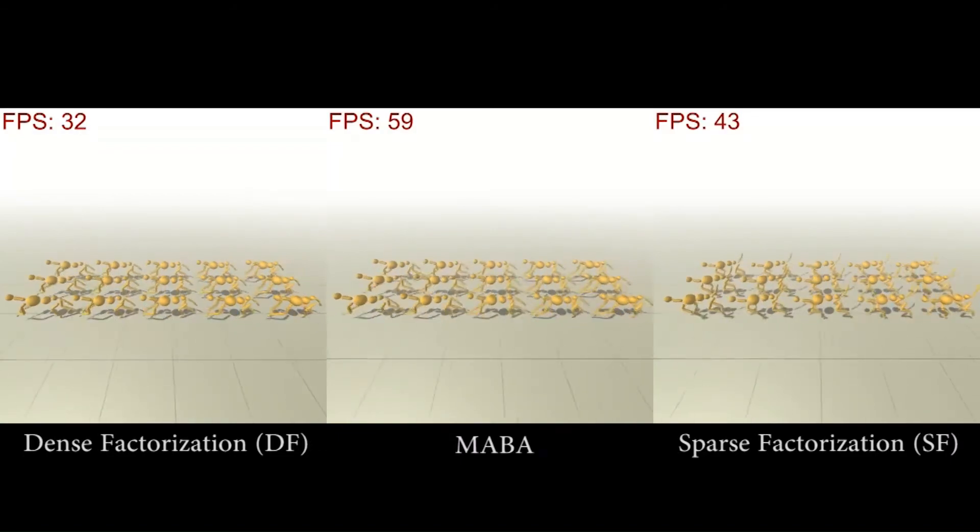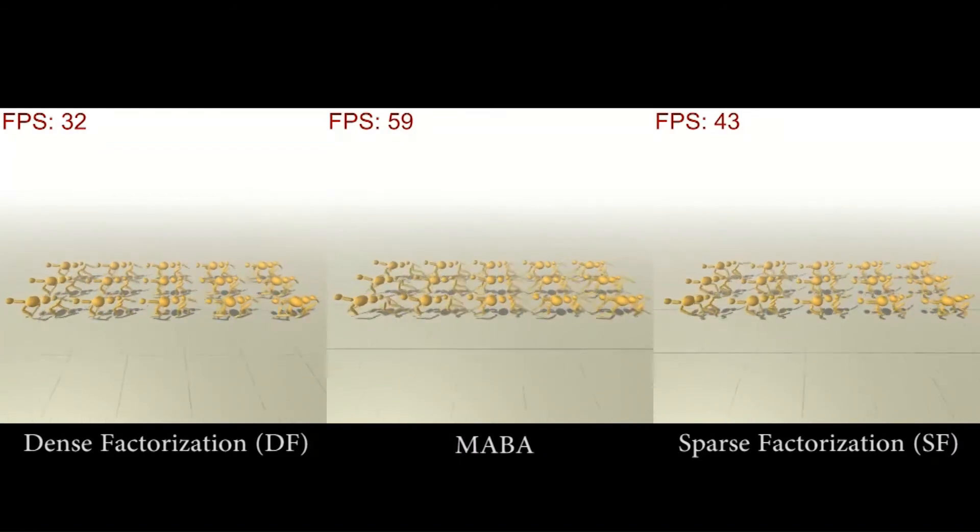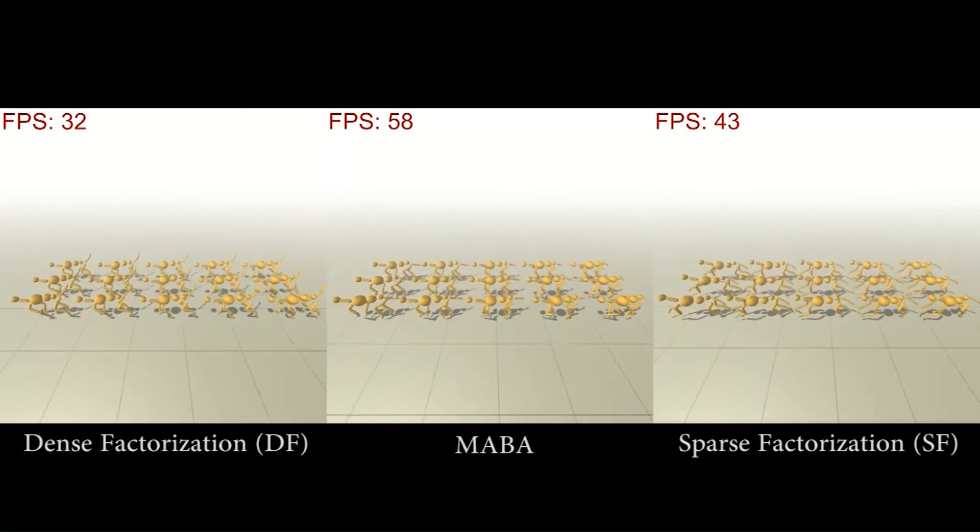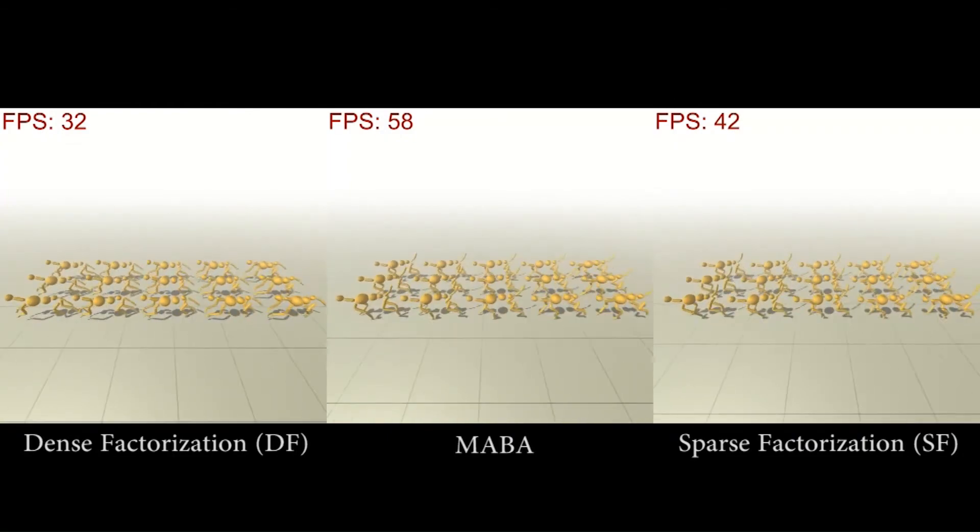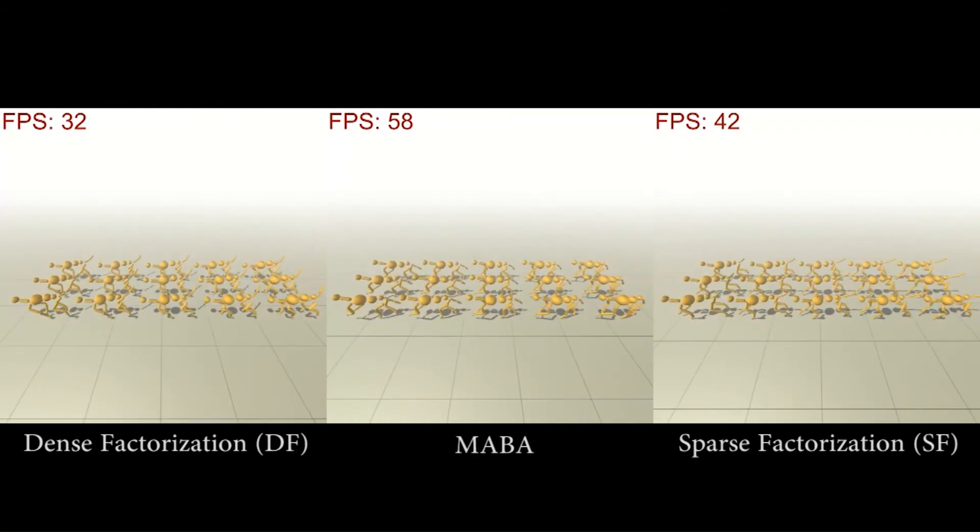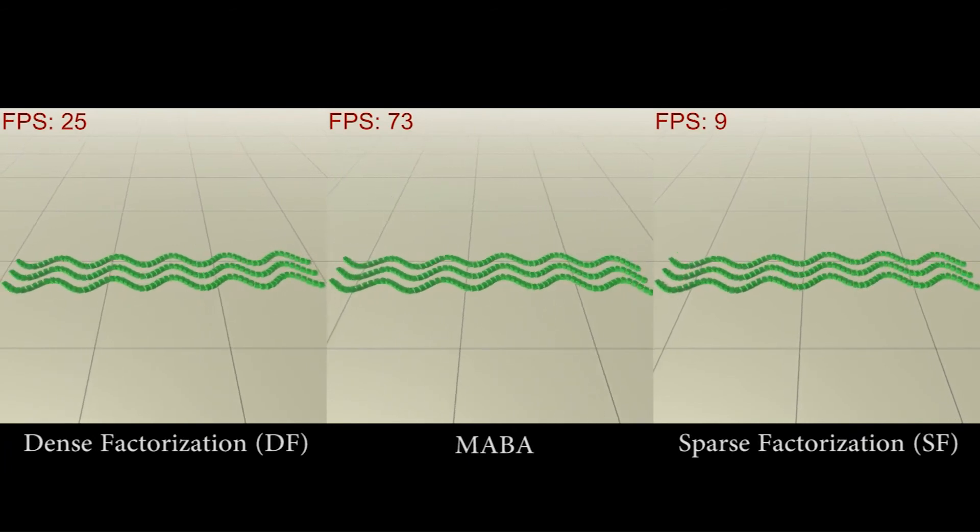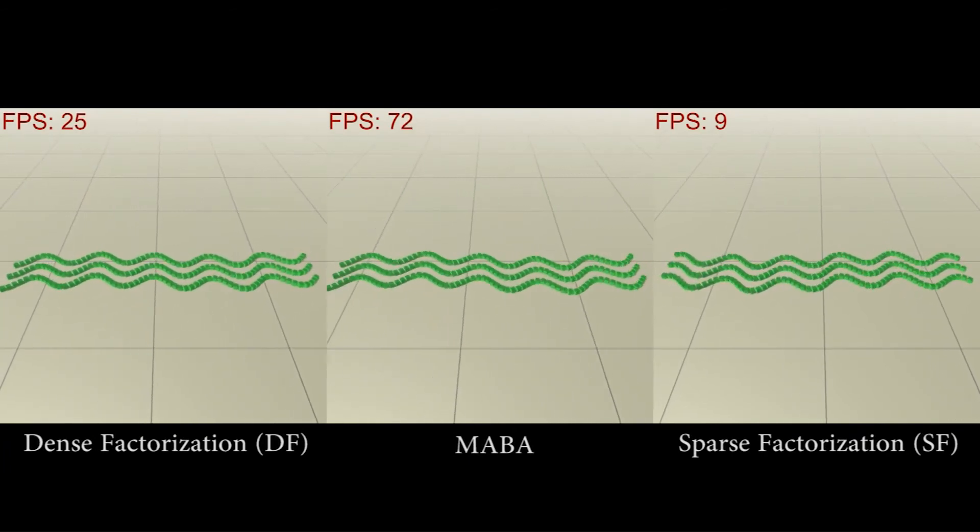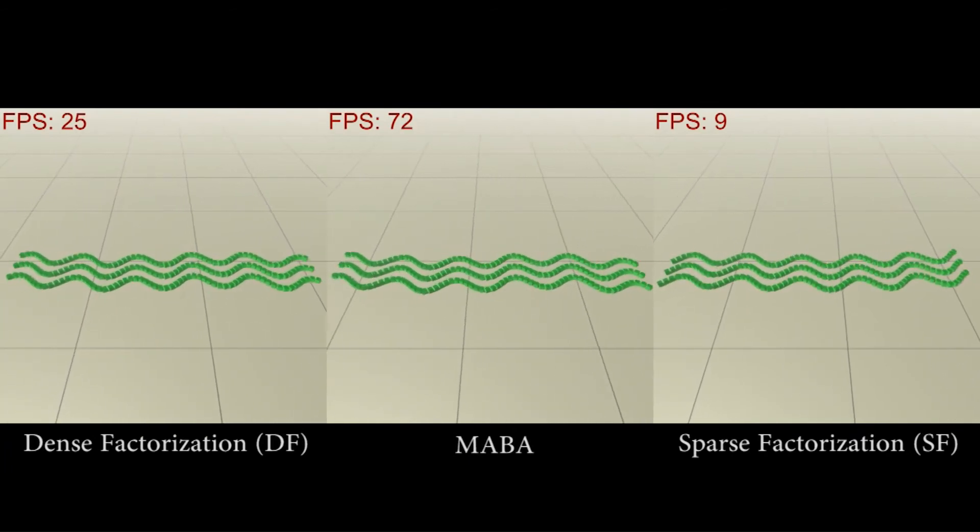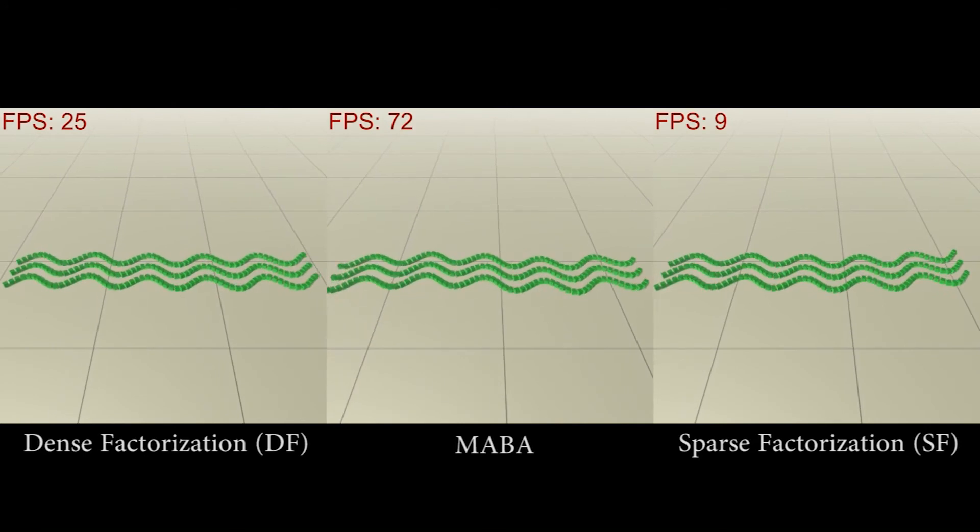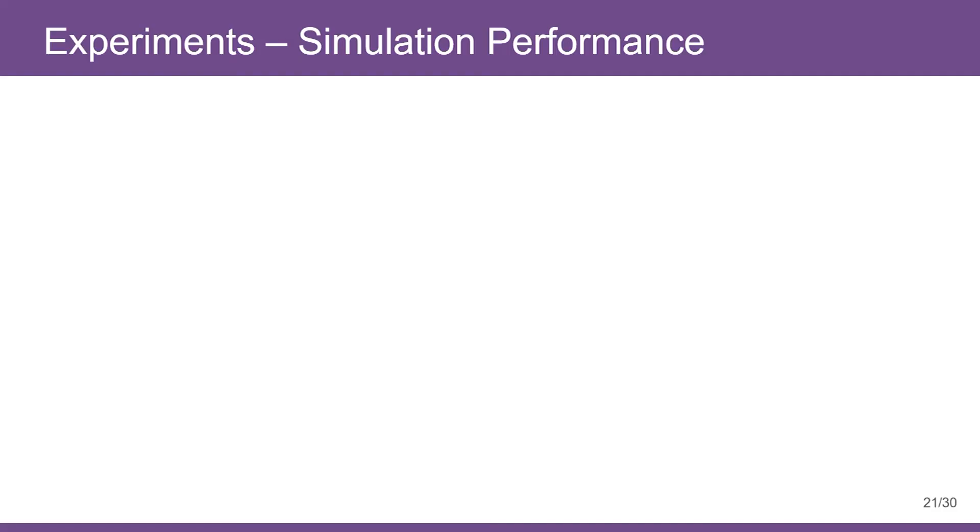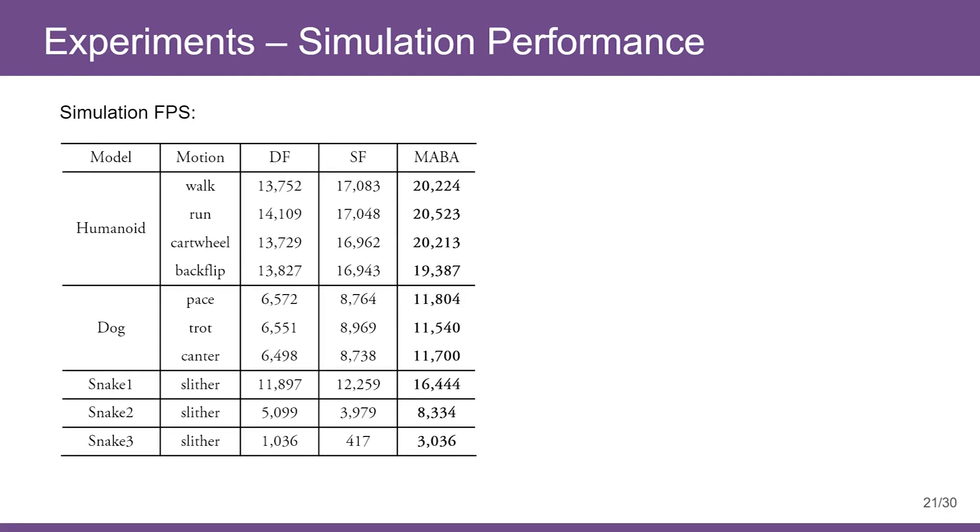As the model complexity grows, MABA shows better advantage over conventional methods due to its linear time complexity. In the snake case, we can see that MABA outperforms other methods significantly. SF performs worse here than DF due to necessary costs for sparse factorization.